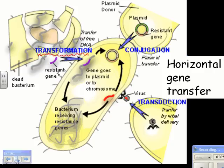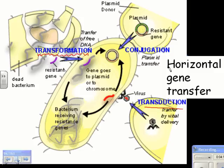Transformation — which we discussed in the Griffith experiments — is another mechanism. A resistant gene on a plasmid can be taken up by a sensitive bacterium, incorporated into a plasmid or chromosome, conferring resistance. All of these are called horizontal gene transfer — when DNA is moved from one bacterium to another, but not from parent to offspring. That's why it's horizontal rather than vertical.